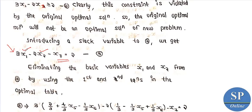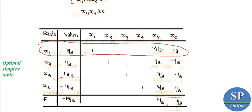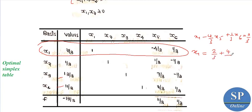Now for Case 2, we need to replace the values of x1 and x2 using the optimal table expressions. From the optimal table: x1 minus (4/3)x5 plus (1/3)x6 equals 2/3. From this, x1 equals 2/3 plus (4/3)x5 minus (1/3)x6.